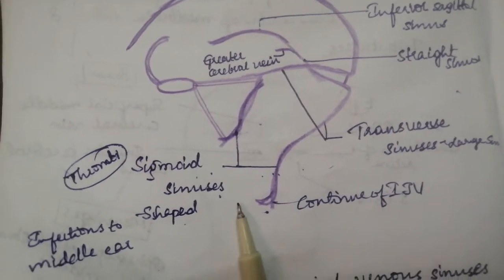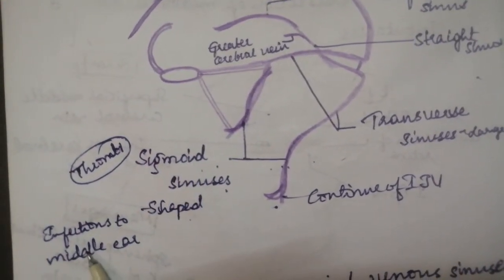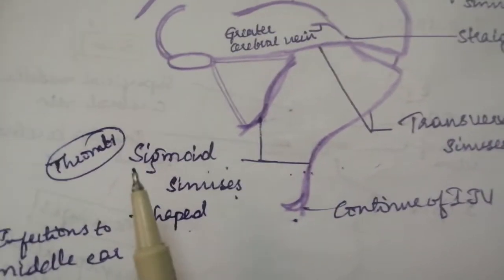And I have here sigmoid sinus having S shape. So, it is shaped like S shape. Any infection to the sigmoid sinus results in infections to the middle ear like having thrombi.